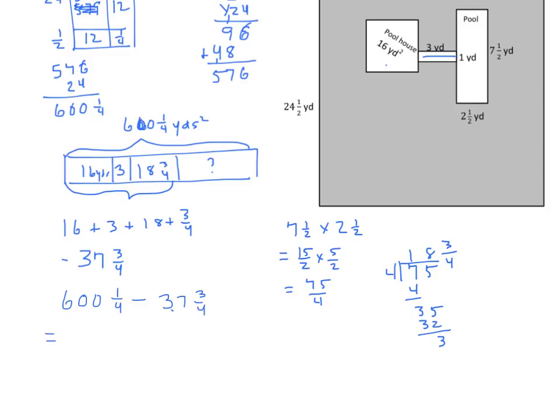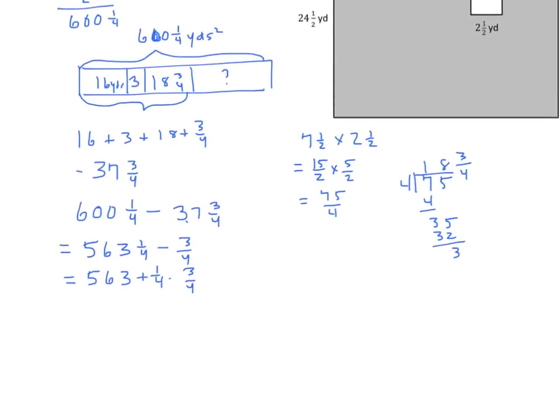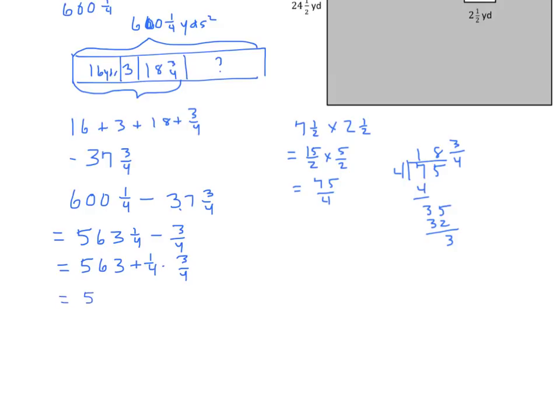Now we simply need to subtract. We have 600 and 1 fourth minus 37 and 3 fourths. We'll subtract the wholes first, and we get 563 and 1 fourth minus 3 fourths. Now we have 563 plus 1 fourth minus 3 fourths. We have 563 minus 3 fourths plus 1 fourth, equals 562 and 1 fourth plus 1 fourth, equals 562 and 1 half. And those are square yards.